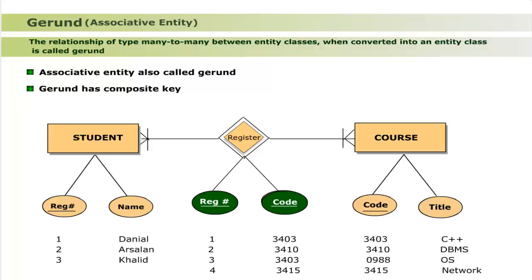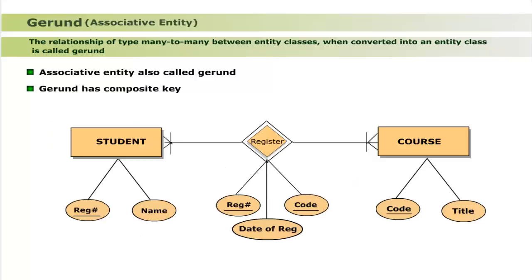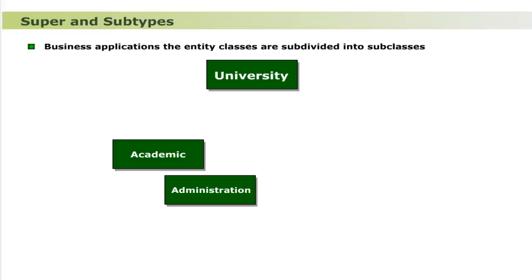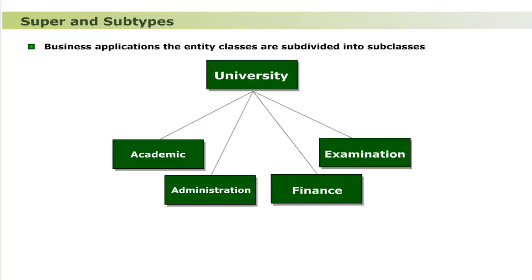The gerund may also have non-key attributes. Super and subtypes: in most business applications, entity classes are subdivided into subclasses for easy administration and management. For example, a university entity class is complex and subdivided into subclasses: academic, administration, finance, examination, and more. The generic entity class which is further subdivided is called a supertype, and each subclass is called a subtype. There are two types of faculty members: regular and visiting. Regular faculty attributes are employee code, employee name, designation, and salary per month. Visiting faculty attributes are employee code, name, teaching rate per hour, and contract period.